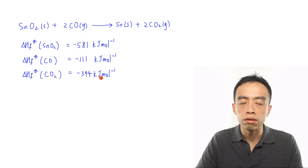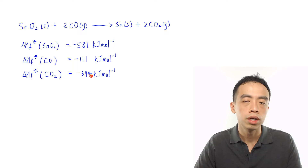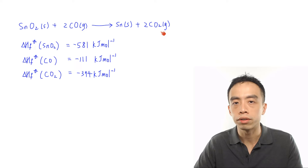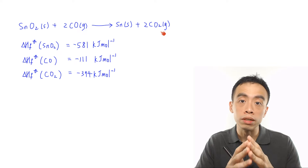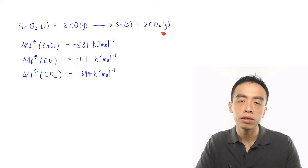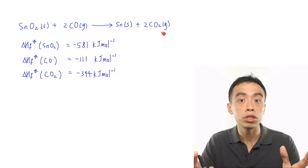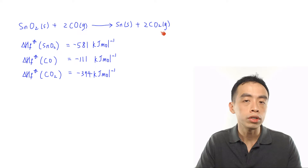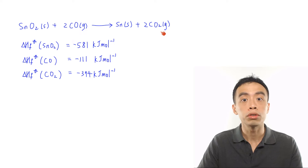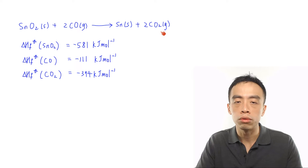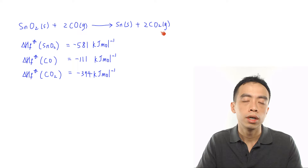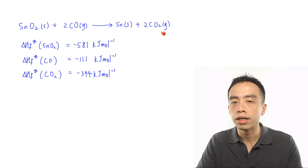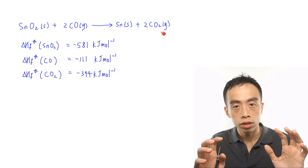We will draw an energy cycle involving all these enthalpy change terms and use Hess's Law to solve for the enthalpy change for this reaction. The first thing we need to be familiar with is the definition of all the enthalpy change terms. The enthalpy change of formation is defined as the energy change when one mole of the compound is formed from its elements in their standard state.